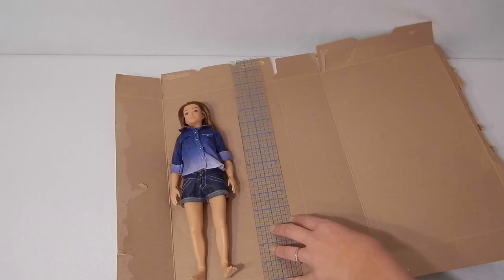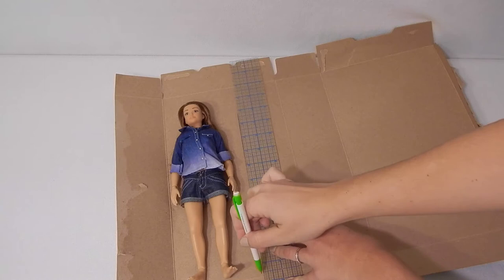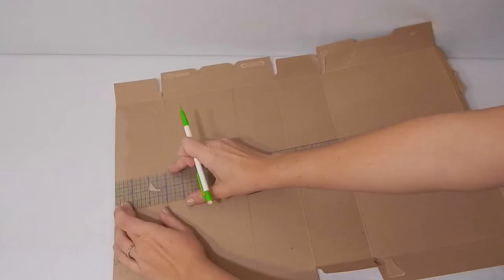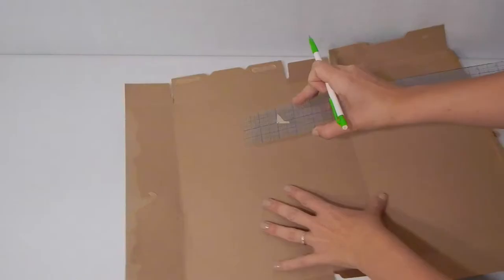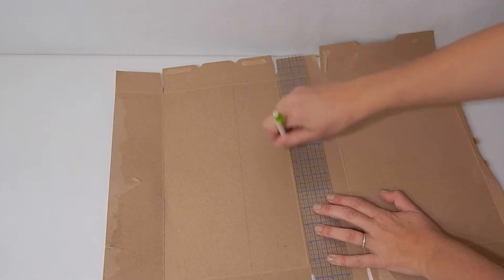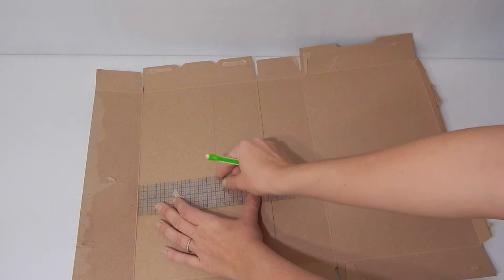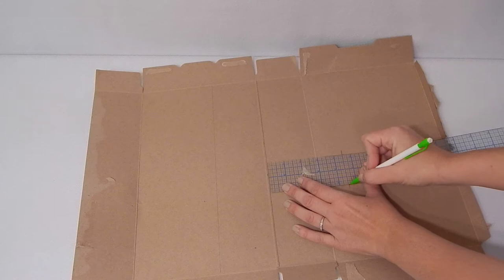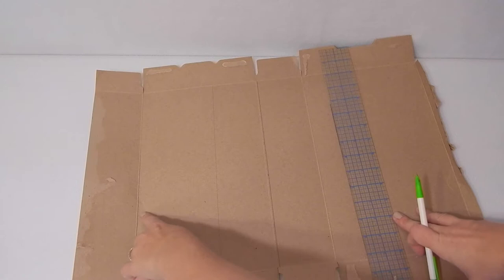Lay it flat. Draw a line to create a section that is just wider than your doll. This will be the back of your house. Measure the width of your first side section and create a second side section that is exactly the same width. Measure the width of your back section and create a second section that is the same size. So now you have a side, a back, a second side, and a front.